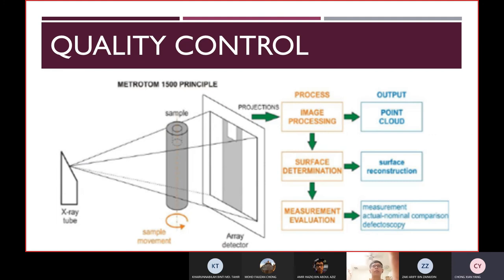In quality control, we know the Metrotom 1500 principle. If we are using the X-ray, then we can know that the process of image processing is producing a point cloud for the output, and also surface determination for two outputs, which are surface reconstruction and measurement evaluation. After the measurement evaluation, there will be output of measurement, actual nominal comparison, defects for scoping.